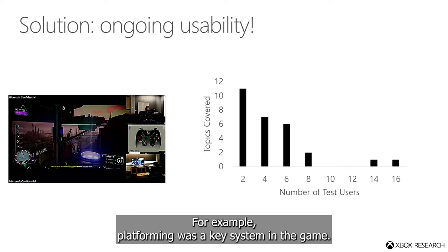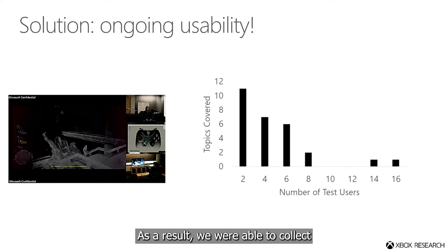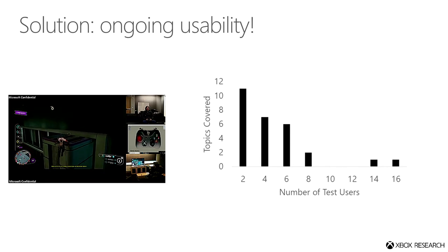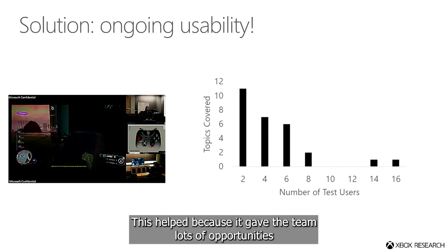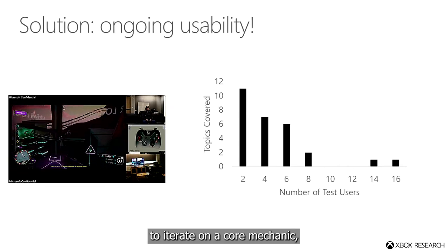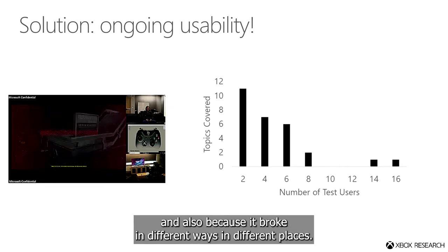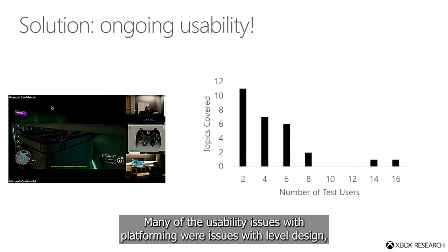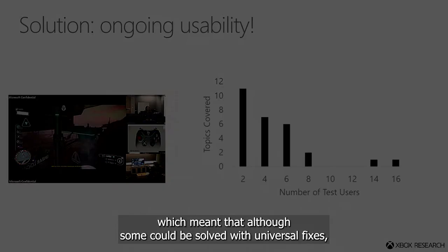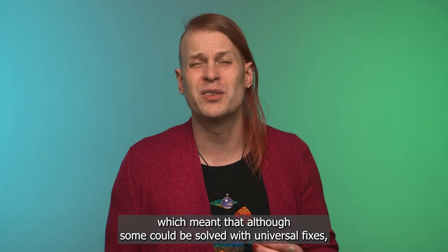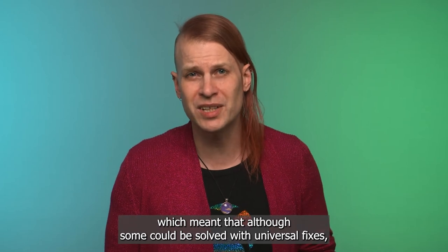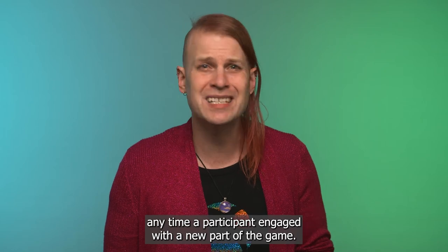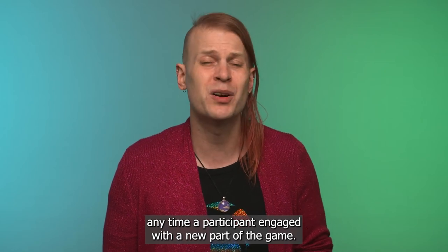For example, platforming was a key system in the game. As a result, we were able to collect feedback on that system with 16 participants, and we needed to. This helped because it gave the team lots of opportunities to iterate on a core mechanic, and also because it broke in different ways in different places. Many of the usability issues with platforming were issues with level design, which meant that although some could be solved with universal fixes, they also benefited from the chance to identify new issues any time a participant engaged with a new part of the game.